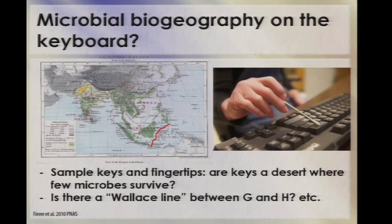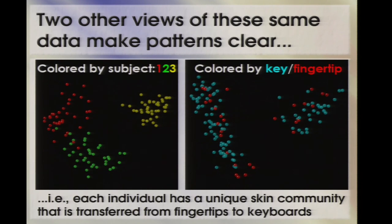Being microbiologists, we did biogeography on a smaller scale — we looked at computer keyboards. The initial idea was: does the space bar have more microbes simply because it's larger? Are the keys the desert where few microbes survive, compared to the lush valleys of your fingerprints? Another view of the same data makes things immediately clear: each point represents an entire microbial community, either from a key or a fingertip. If colored by person, all keys and fingertips from the same person cluster together, whereas coloring by key versus fingertip shows no separation. Each of us has a unique skin community that we transfer from fingertips to keyboards as we type. We also showed we could match the palm of the hand to the computer mouse someone uses with up to 95% accuracy. This came out in PNAS a couple of years ago — but more importantly, it was on CSI Miami, so you really know it's true.